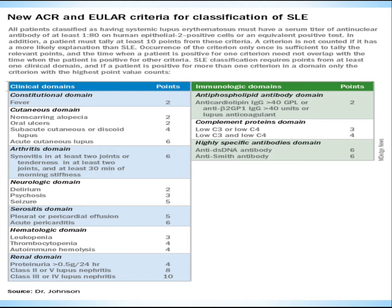After the positive ANA entry criterion is met, a patient must score at least 10 points from the additive criteria. A criterion is not counted if it has a more likely explanation than SLE. For example, fever is on the criteria, but if a patient has an infection, the fever has a more likely explanation than SLE.